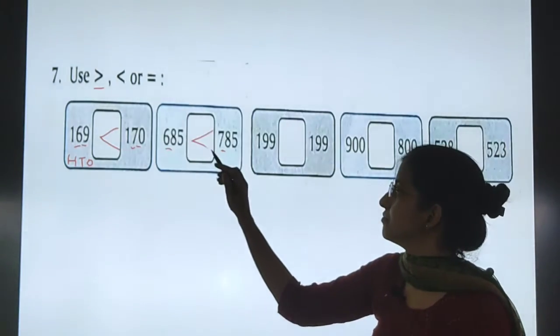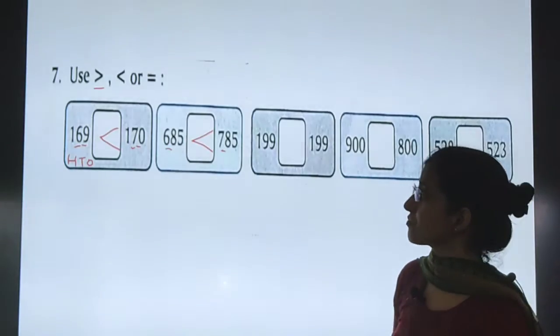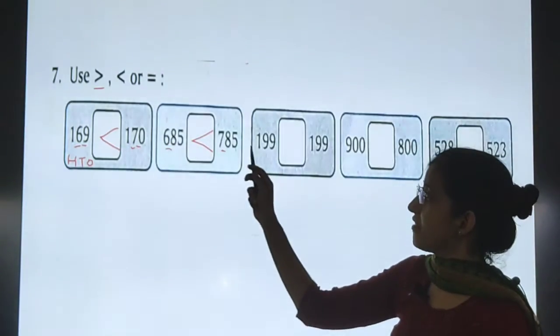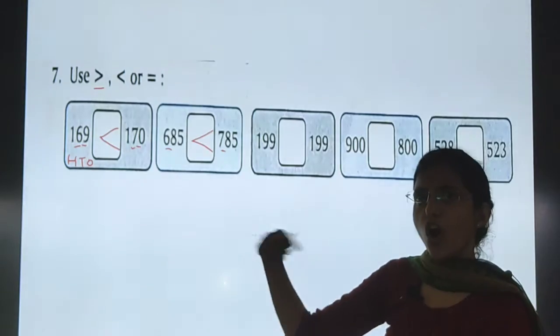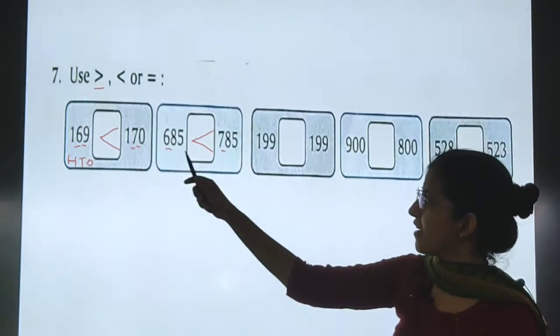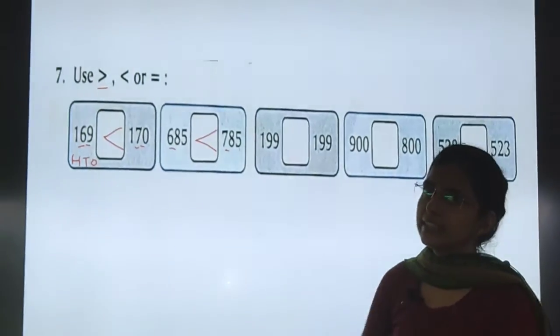785 is greater than 685. Or you can say that 685 is less than 785.